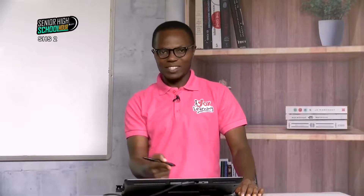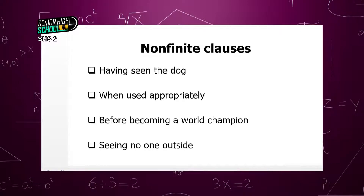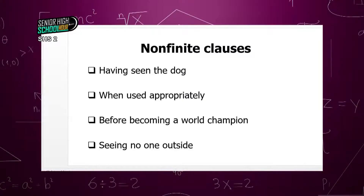Now for non-finite clauses: 'having seen' — 'having' is the ING form and 'seen' is the past participle of 'see.' Then 'when used' — we can't tell whether this is present or past; it has no subject, so it is a non-finite form. 'Before becoming a world champion' — 'becoming' is the ING form. 'Seeing no one outside' — 'seeing' is the ING form. All of these are non-finite clauses.